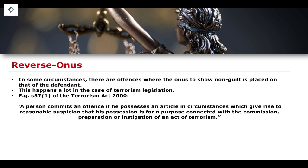Essentially, possessing some kind of article connected to terrorism — such as a terrorist handbook — automatically gives rise to this suspicion. It is then up to the defendant to prove otherwise, to prove the other reason why they have that particular item in their possession. As a result, this provision within the Terrorism Act is a reverse onus offence, in the sense that it is assumed the person possesses the item for the purpose connected with the commission, preparation, or instigation of an act of terrorism, and the defendant must prove otherwise.